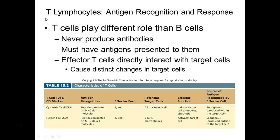T cells play a different role than B cells — they never produce antibodies, and they must have antigen presented to them, whether by a nucleated somatic cell or an antigen-presenting cell. B cells, on the other hand, can interact directly with antigen. Effector T cells directly interact with target cells — they actually do something. There are two ways to present: MHC class 1 for stuff inside any cell, and MHC class 2 specialized for antigen-presenting cells.